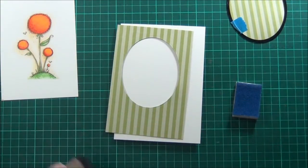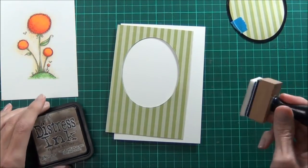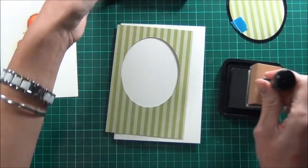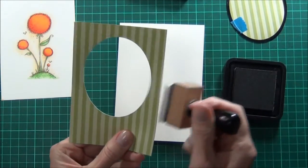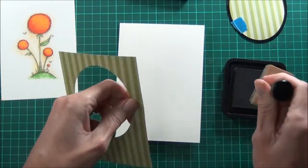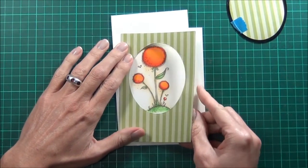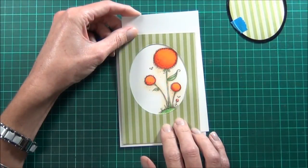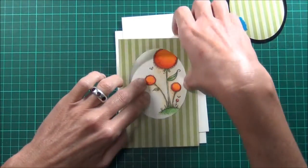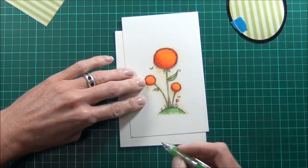So I'll use some Frayed Burlap distress ink and just a blending tool so I don't end up with too much ink on the edge. I'm just going to run that around the edge of my design panel, and I'll work out where I want my image to sit. And then I'll just mark where I want to cut that.